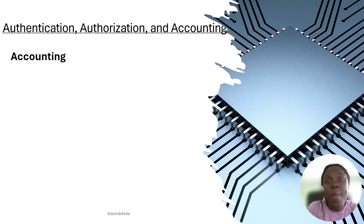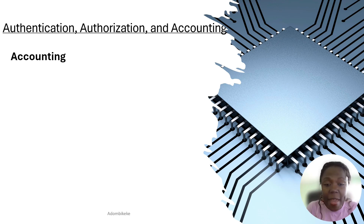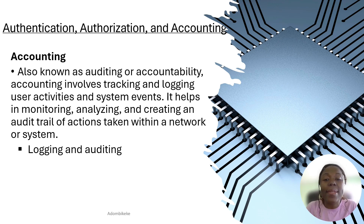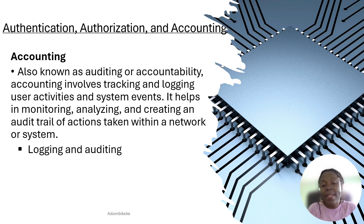It's not just audit logs to find bad things — we want to hold everybody accountable. If someone says they sent an email, we can go back into the backend and verify that yes, they sent it. Audit logs, also known as auditing and accountability, involve tracking and logging user activities and system events. It helps in monitoring, analyzing, and creating an audit trail of actions taken within a network or system.